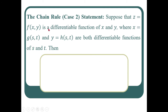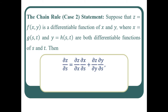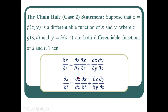Case two of the chain rule: Suppose z = f(x, y) is a differentiable function of x and y, where x = g(s, t) and y = h(s, t) are both differentiable functions of s and t. Then indirectly z becomes a differentiable function of s and t, and the partial derivatives are: ∂z/∂s = (∂z/∂x)(∂x/∂s) + (∂z/∂y)(∂y/∂s), and ∂z/∂t = (∂z/∂x)(∂x/∂t) + (∂z/∂y)(∂y/∂t).